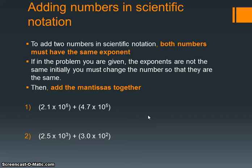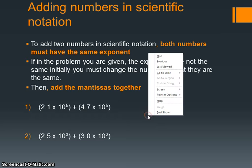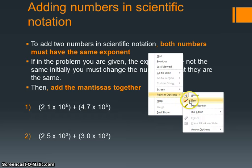Adding numbers in scientific notation is a little bit different, and it's definitely not as fun as multiplying and dividing them. If you want to add two numbers in scientific notation, both numbers must have the same exponent. If the exponents are not the same initially, you must change the numbers so they are the same, then you can add the mantissas together. I have two examples here, one where they are the same and one where they're not.